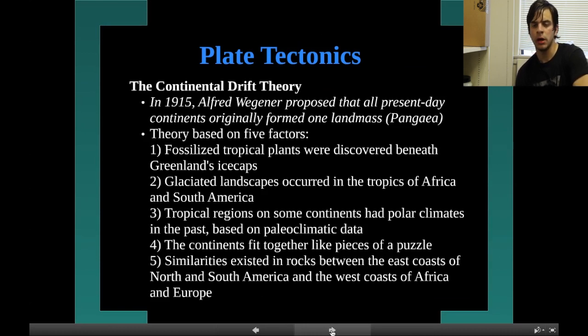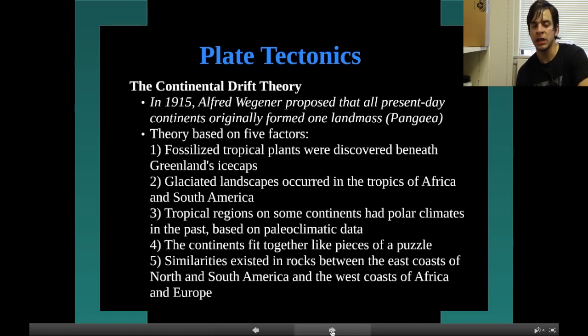Now, about plate tectonics. There are two theories. The first one is the continental drift theory. In 1915, Alfred Wegener proposed that all present-day continents originally formed one landmass called Pangea. The theory is based on five factors.